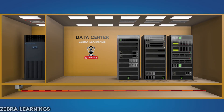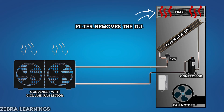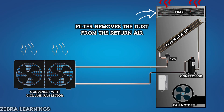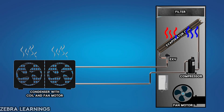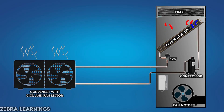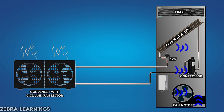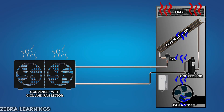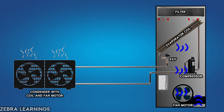Water leak sensors are installed at the bottom of the data center to detect any water leaks. If a leak is detected, an alarm will immediately notify us. In a data center, the air drawn into the PAC through the return duct first passes through a filter to remove dust and other contaminants. Next, the filtered air is directed through the evaporator coil, where it is cooled by the refrigerant circulating within the coil. An evaporator fan motor then drives the cooled air through the supply duct, delivering it back to the data center. This process of air filtration, cooling, and distribution is continuous, ensuring that the data center maintains a cool and controlled environment.